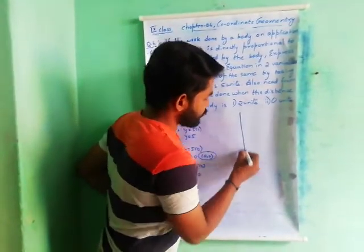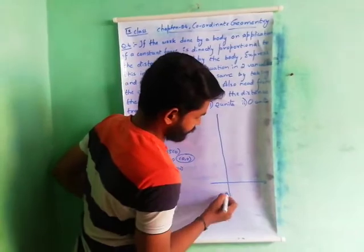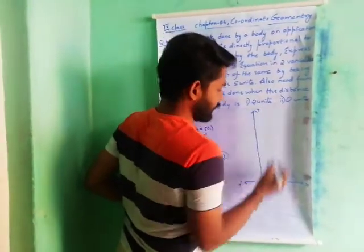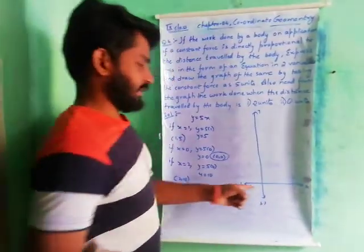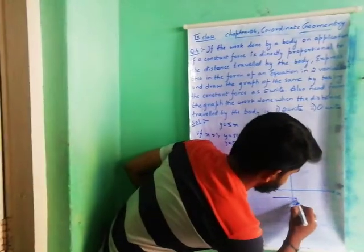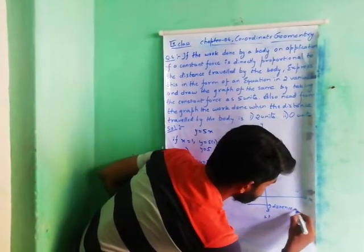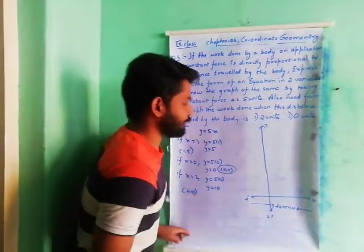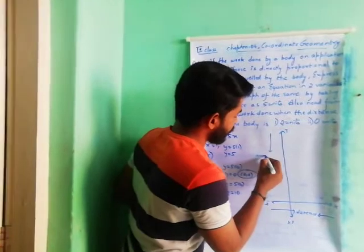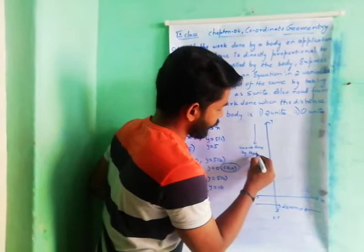First of all we draw the x and y axes. This x-axis is taken as the distance travelled by the body, and this y-axis is taken as the work done by the body.